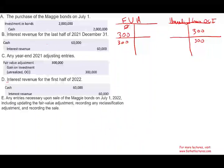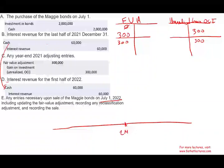Six months later, I received the interest revenue again — very much the same as December 31st: debit Cash, credit Interest Revenue. Now we get into July 1st. After I received the interest revenue on July 1st, I sold this investment for $1.8 million. Here's what happened: we purchased this investment at $2 million. At the end of the year the investment was worth $2.3 million — it went up $300,000, so we recorded a gain. But by the time we sold it, it was $1.8 million — it went back down.